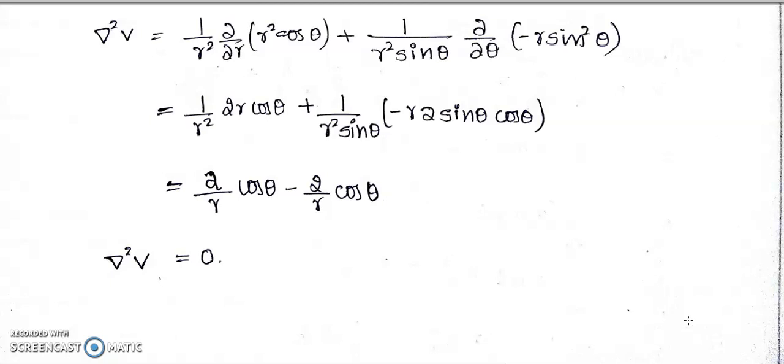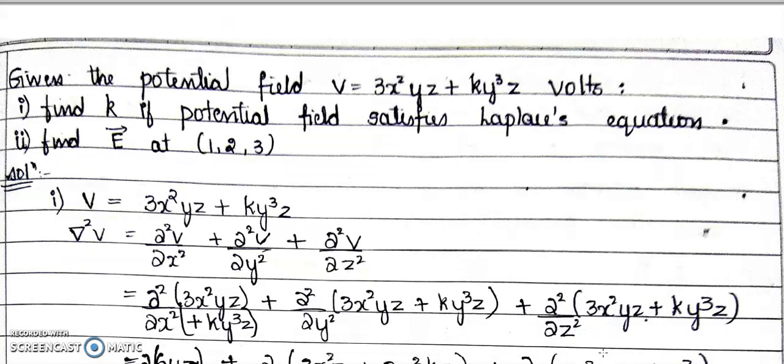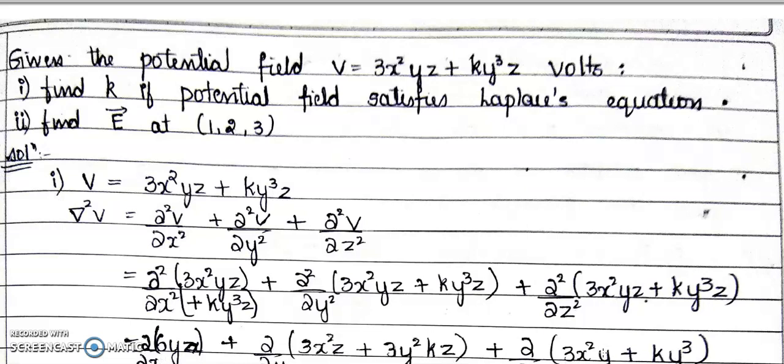This is how we prove whether a given potential field satisfies the Laplace equation or not. The next problem: given the potential field V = 3x²yz + ky³z, find k if the potential field satisfies the Laplace equation. Since the Laplace equation must be satisfied, we need del²V = 0. This equation is in the Cartesian coordinate system, so del²V = ∂²V/∂x² + ∂²V/∂y² + ∂²V/∂z².